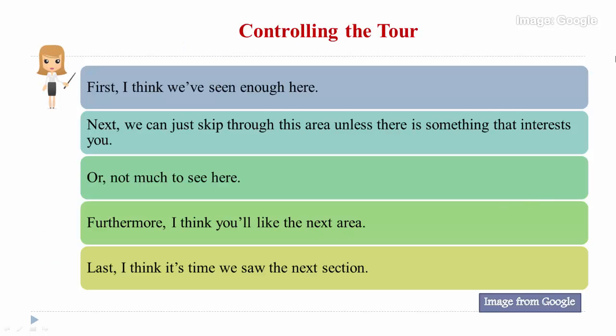Next, let's focus on sentence patterns for controlling the tour. If we only have 10 minutes left before lunch, we might say: 'I think we have seen enough here,' or 'We can just skip through this area unless there is something that interests you.' After lunch, we might come back here.